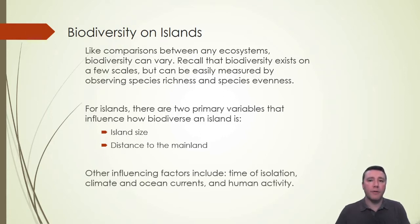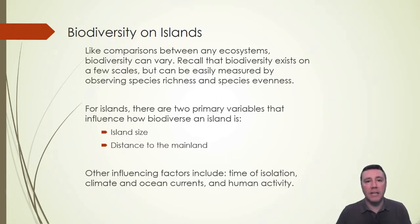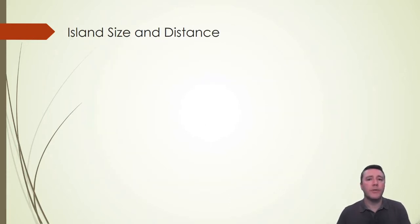Other influential factors include how long species on the island have been isolated from other living things on the mainland, what kinds of natural resources are present on the island, what the island's climate is like, as well as the ocean currents that surround it that carry in nutrients, and what level of human activity is present. Since the two main factors influencing biodiversity on islands are size and distance, let's take a look at those more closely.